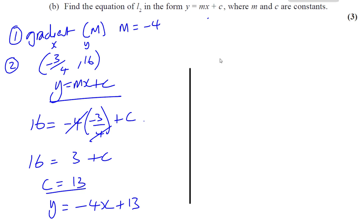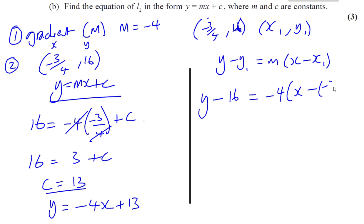Another way of doing it is to use the formula y minus y1 equals m times x minus x1. Where x1 and y1 are the point that we know. In this case, x1 and y1 will be minus 3 quarters and 16. Okay, so y minus y1. Y minus 16. Is equal to m, which is negative 4 gradient. Times x minus x1, which is minus 3 quarters. x minus minus 3 quarters.